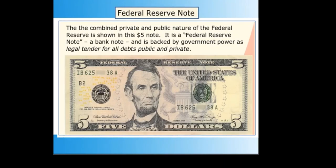The combination of private control and government power is a vital aspect of the Federal Reserve, demonstrated on the Federal Reserve Note itself, where it states this note is legal tender for all debts public and private. The banking cartel retains the right to determine to whom and for what purpose it will make loans and issue money. The main items to be clear about are: number one, private corporate control; number two, creating money by monetizing debt; and number three, the need to compound debt for the system to work.